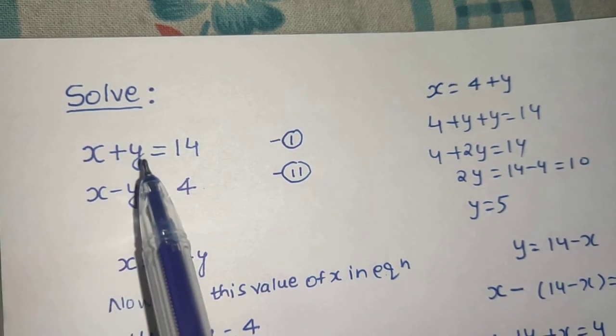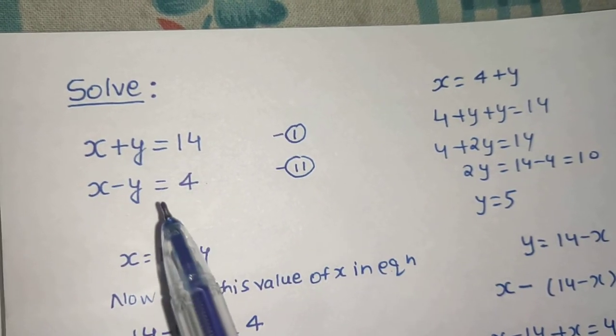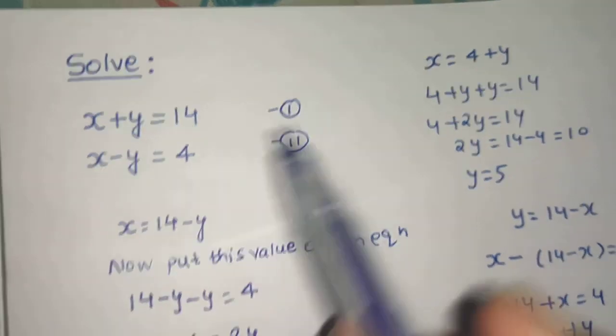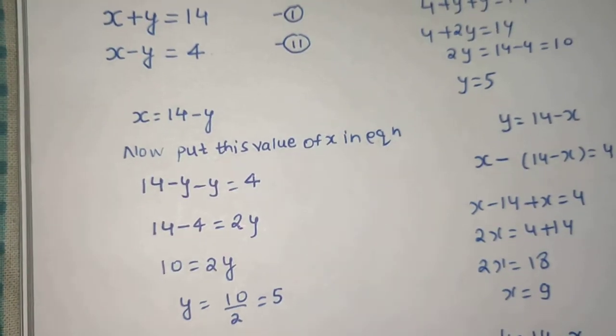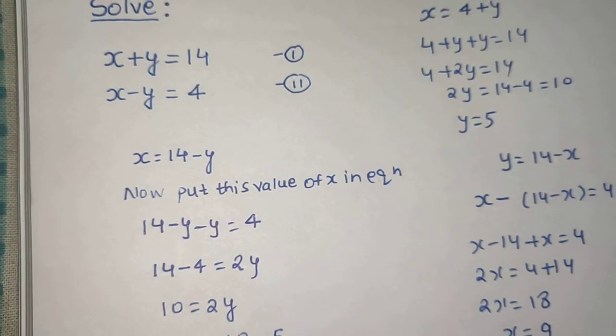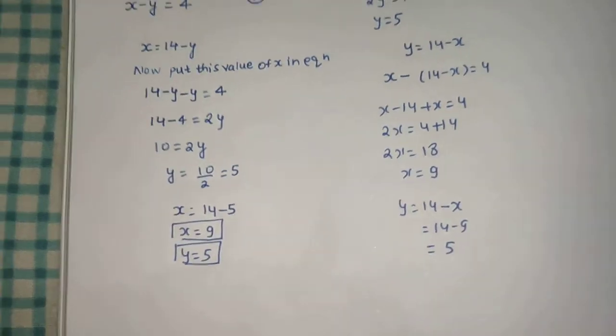Take the value of x or y from one equation, put that in the second equation, and you will get the value of one variable. Then find the other value to get your final answer.